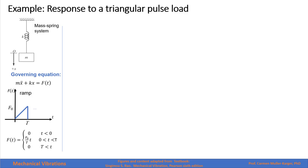This next example is to find the response of a triangular pulse force. It means that we have a triangular ramp, but it ends at capital T. This is also a piecewise function where we have 0 before T equals 0. We have a ramp between 0 and capital T, and then this function becomes 0 again.